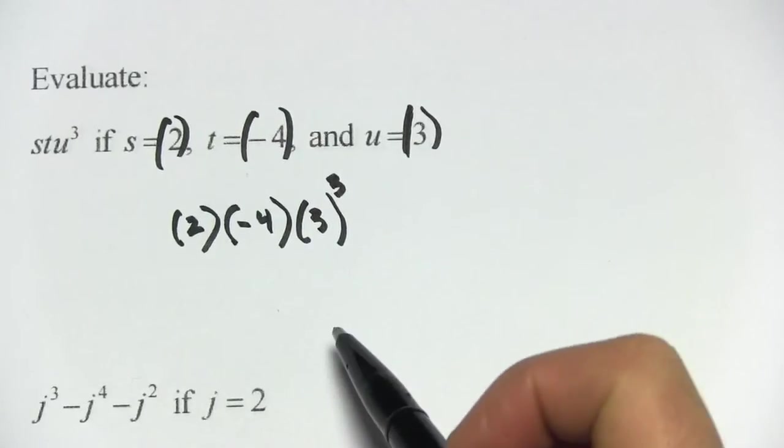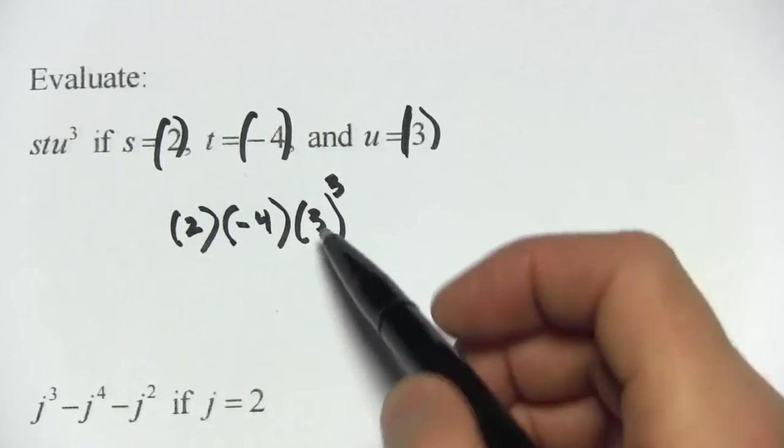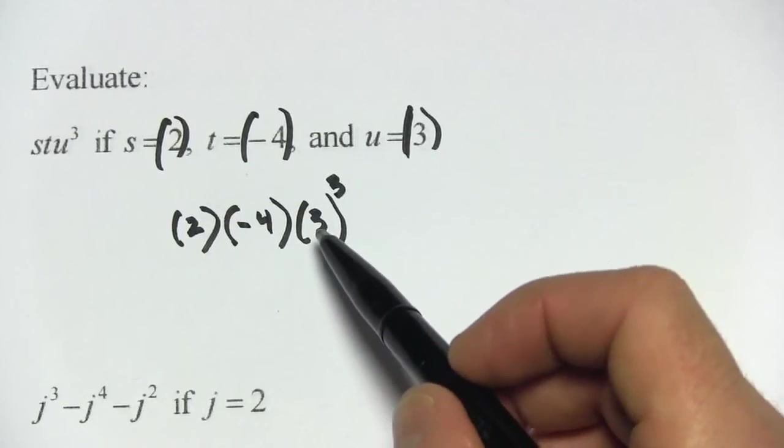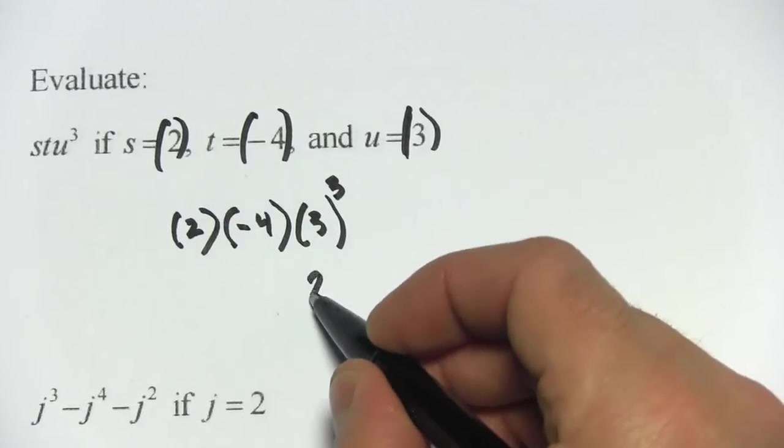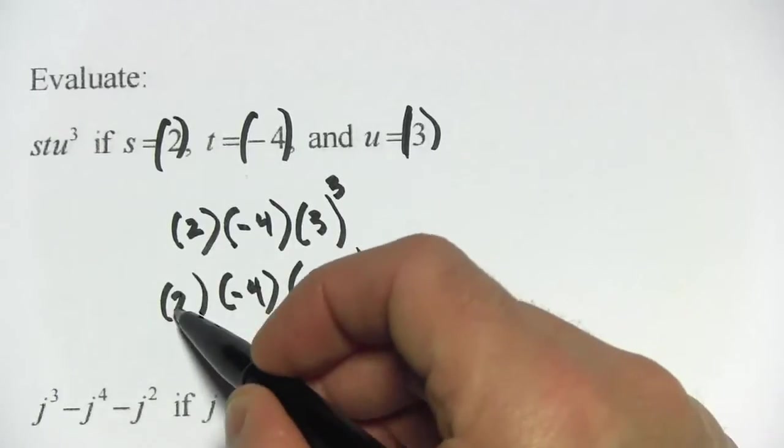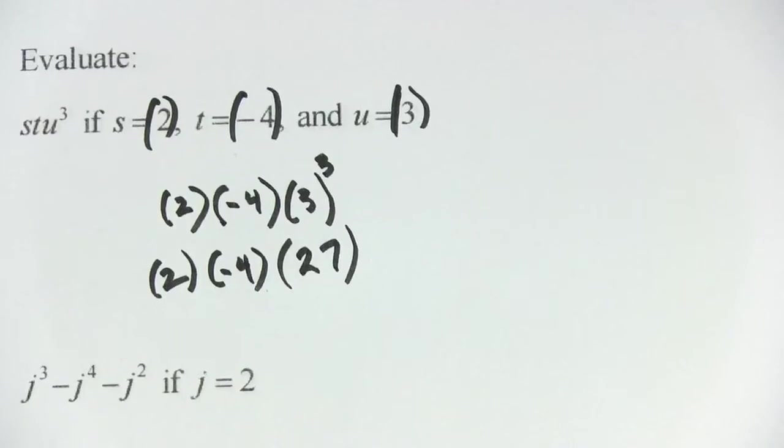So we've made our substitutions. Now we're going to start calculating. The first thing I'm going to do is raise this 3 to the third power—we'll start with the exponents. So 3 to the third power is 27, and then we have negative 4 and we have 2.